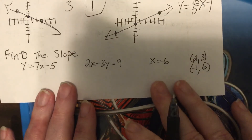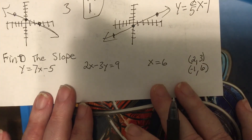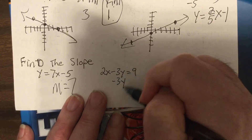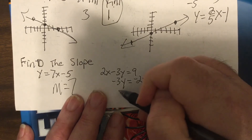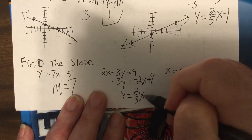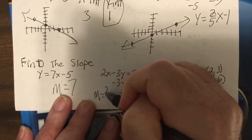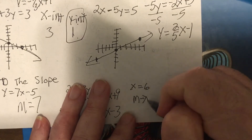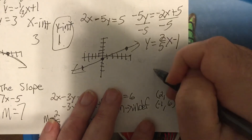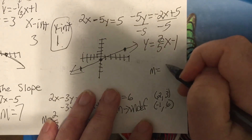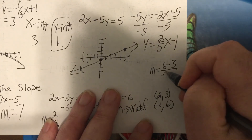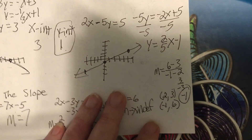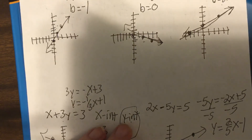Last thing — find the slope of those four. The slope is seven. This one: subtract 2x, solve for y, divide by negative three — slope is two-thirds. Whenever you have x equals a number, it's a vertical line whose slope is always undefined. And this one: six minus three over negative one minus two — that's three over negative three, which is negative one. Hopefully you remember how to do that — that's the review of last week's material. Have a good day!